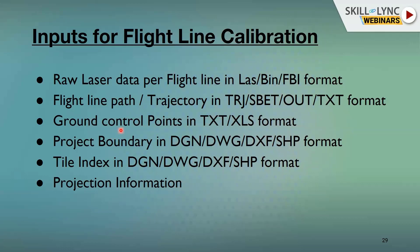To improve and justify data accuracy, ground control points are required. For example, if you tell a client you achieved 10 centimeter accuracy and they question it, you can use ground control points and base station points, overlay them, and demonstrate the accuracy. You can also ask clients to provide reference points for verification.